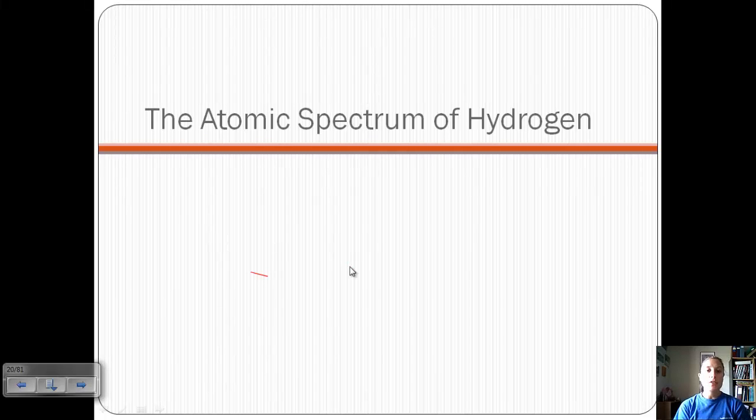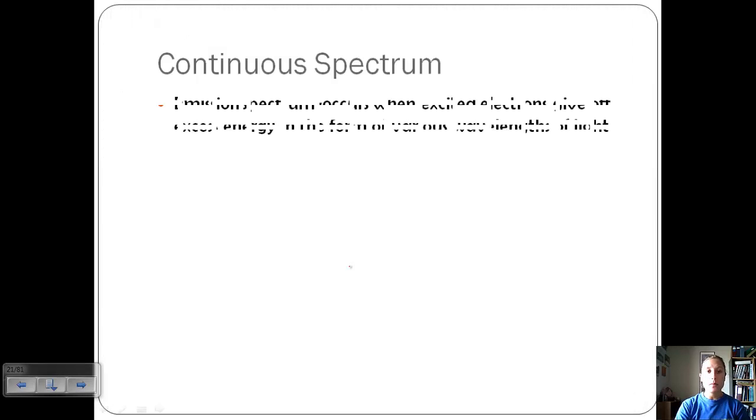Today we're going to continue our discussion of atomic structure and periodicity. We're looking at the atomic spectrum of hydrogen and then relating that to the Bohr model. So let's go over a few terms.